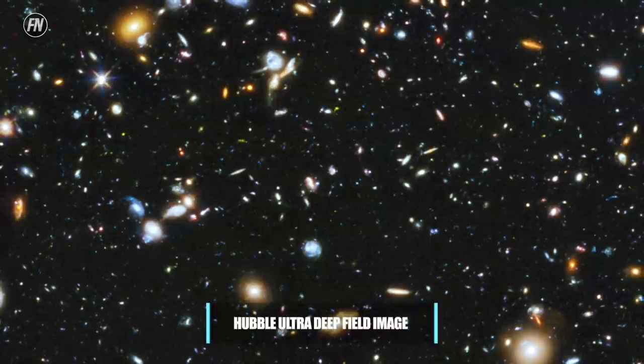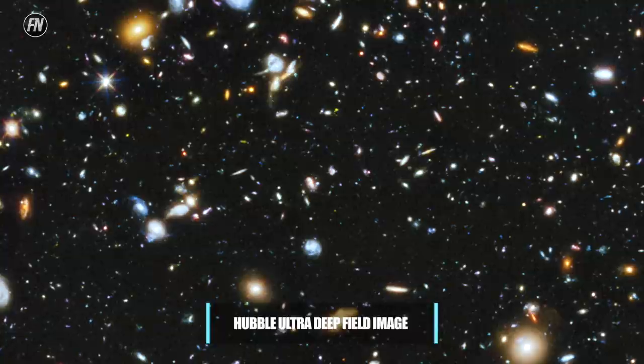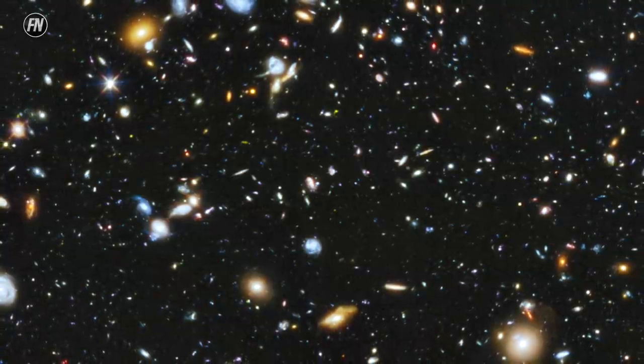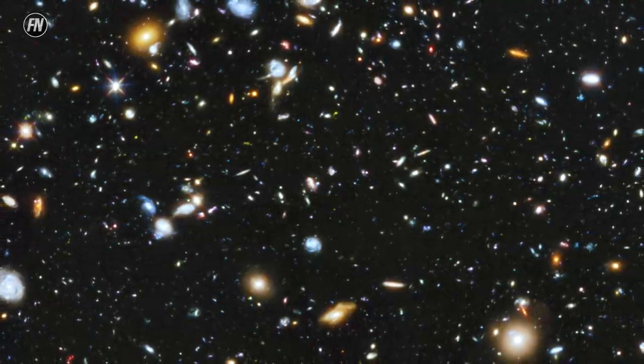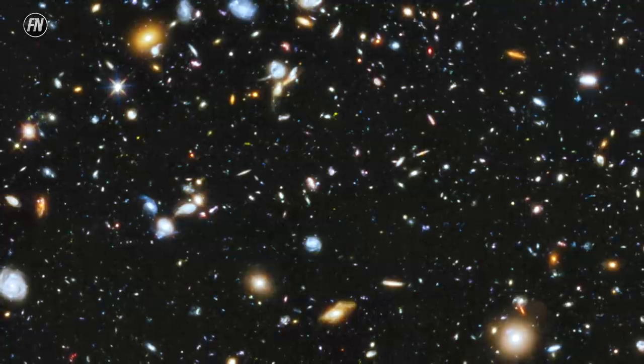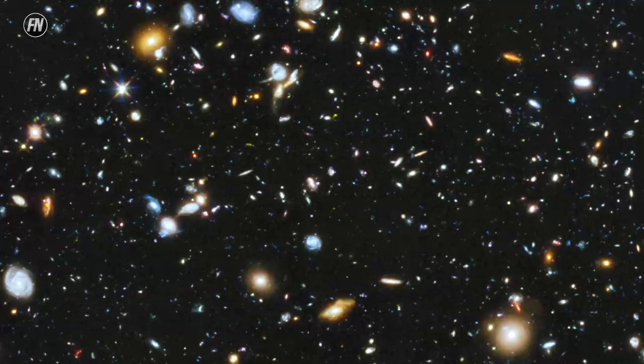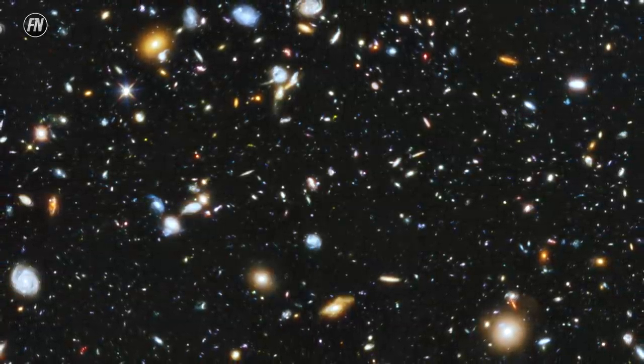Hubble Ultra Deep Field Image. It may not look like it, but there are over 10,000 galaxies contained in this one image. It's the culmination of separate exposures taken over a decade between 2002 and 2012, combining the visible light, infrared, and ultraviolet spectrums. Some of the galaxies shown are old, able to be aged to within 100 million years after the Big Bang.